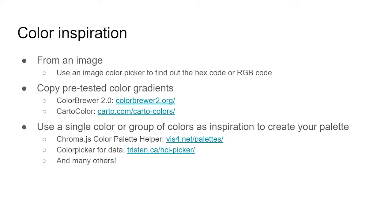So keeping the meanings in mind, how do you decide which colors to use for your visualization? There are many places to find color inspiration. You could choose a color from an image — to find the exact shade and hue, I recommend using an image color picker to get the color hex code or RGB code. You can also copy pre-tested color gradients from sites such as Color Brewer and Carticolor, or use tools such as Chroma.js, Color Palette Helper, or Color Picker for data, among many others.